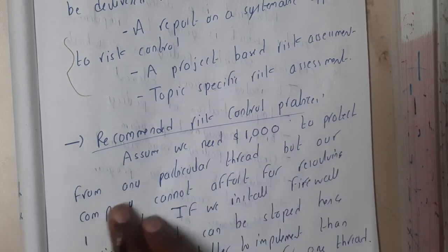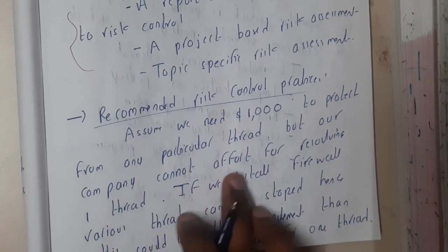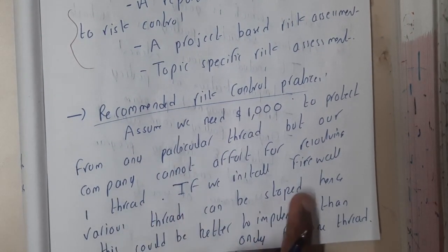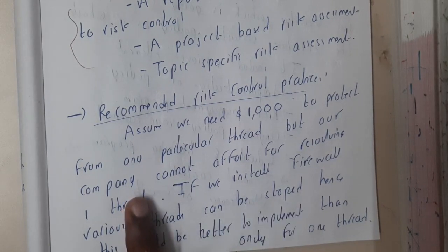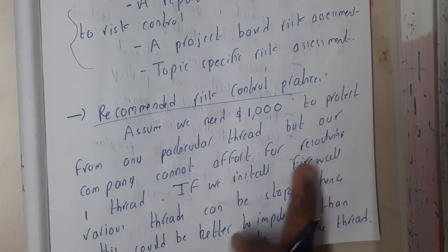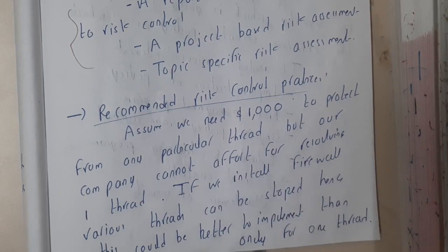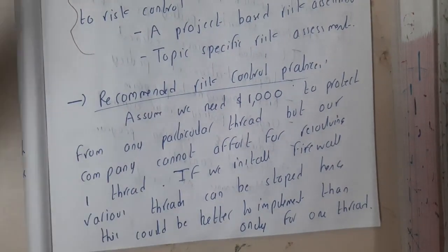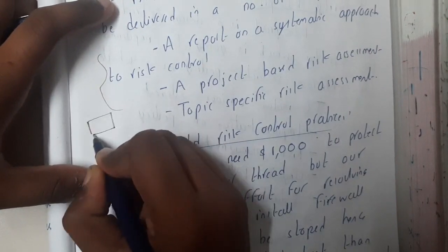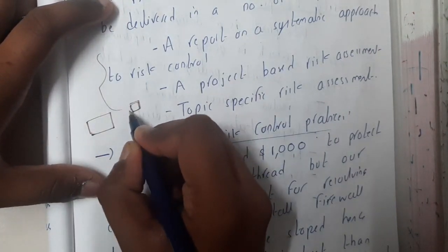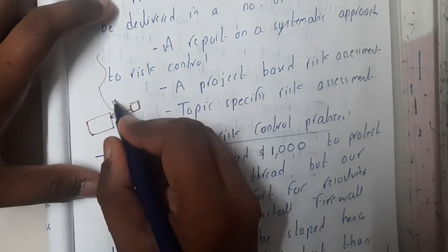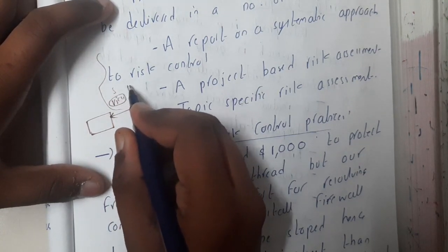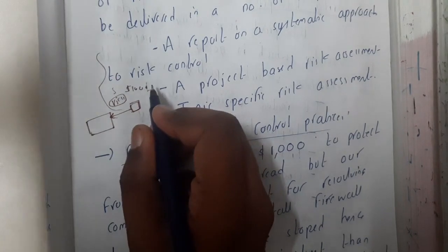This is a small example of recommended risk control practices. Assume we need a thousand dollars to protect from a particular threat, but the company cannot afford that amount to resolve a single threat. So instead, you install a firewall which can resolve that threat and also filter other errors and viruses. This is an advantage and it will be approved.